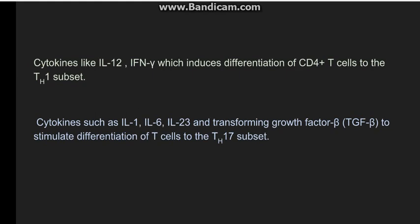Cytokines like interleukin-12 and interferon-gamma lead to conversion of CD4 cells into the TH1 subset, while cytokines like interleukin-6, interleukin-1, interleukin-23, and TGF-beta lead to conversion of CD4 T cells into the TH17 subset. These TH1 and TH17 cells are known as effector T cells.